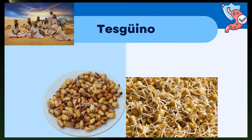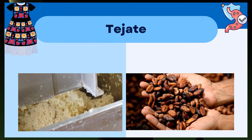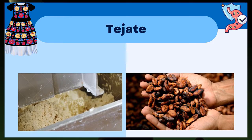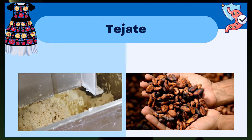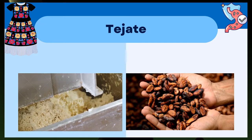El tejuino que elaboran los tarahumaras en el estado de Chihuahua es un tipo de cerveza base de maíz con un proceso de malteo con agua; se cuece para hidrolizar la mayor cantidad de almidones y se fermenta. El tejuino tiene un papel muy importante en los aspectos religiosos, rituales y de curación, y contiene microorganismos con potencial probiótico. El tejate es otro alimento fermentado tradicional elaborado con masa de maíz agria y cocoa, que se disuelve en agua y se toma como bebida refrescante, principalmente en el estado de Oaxaca.